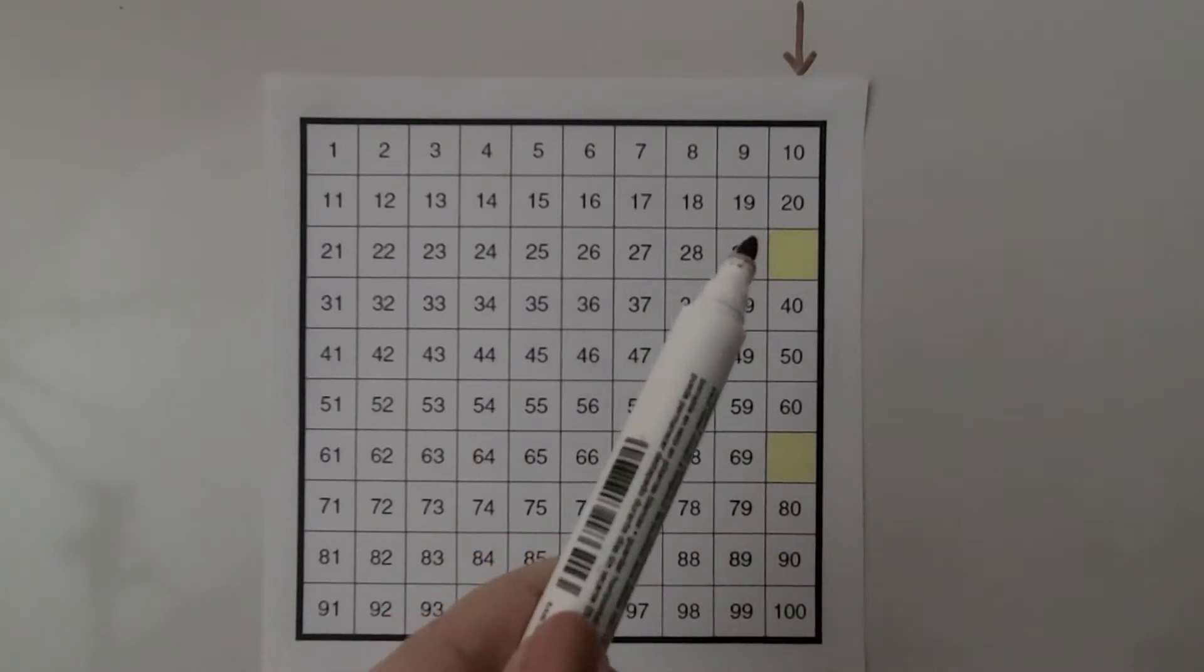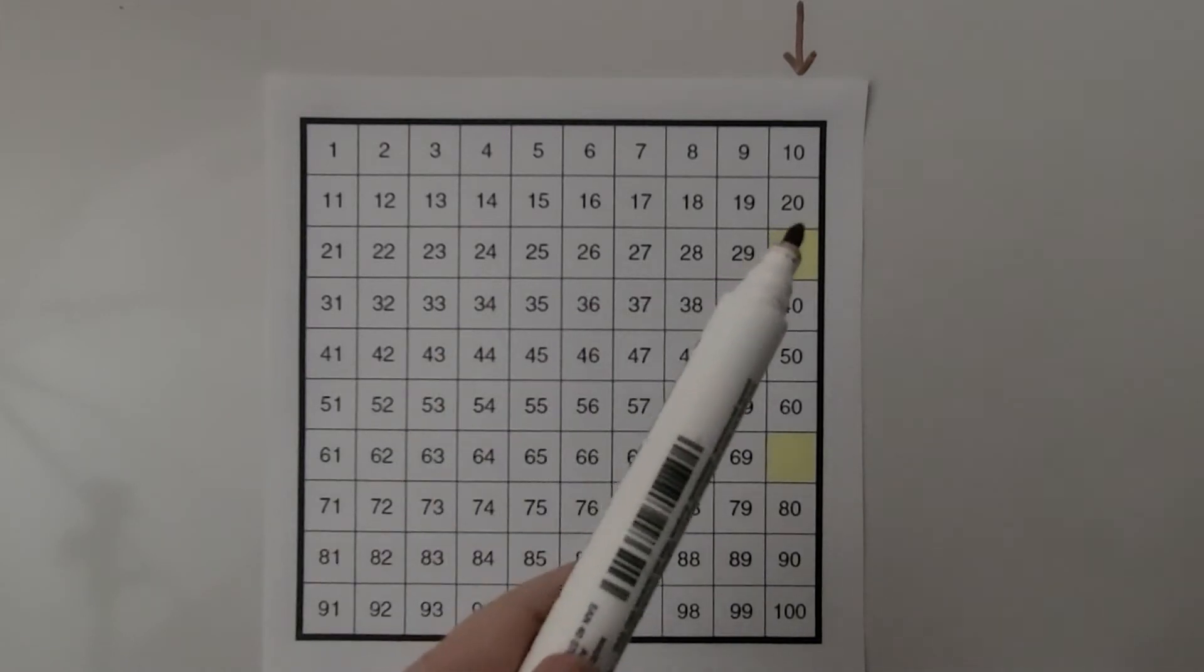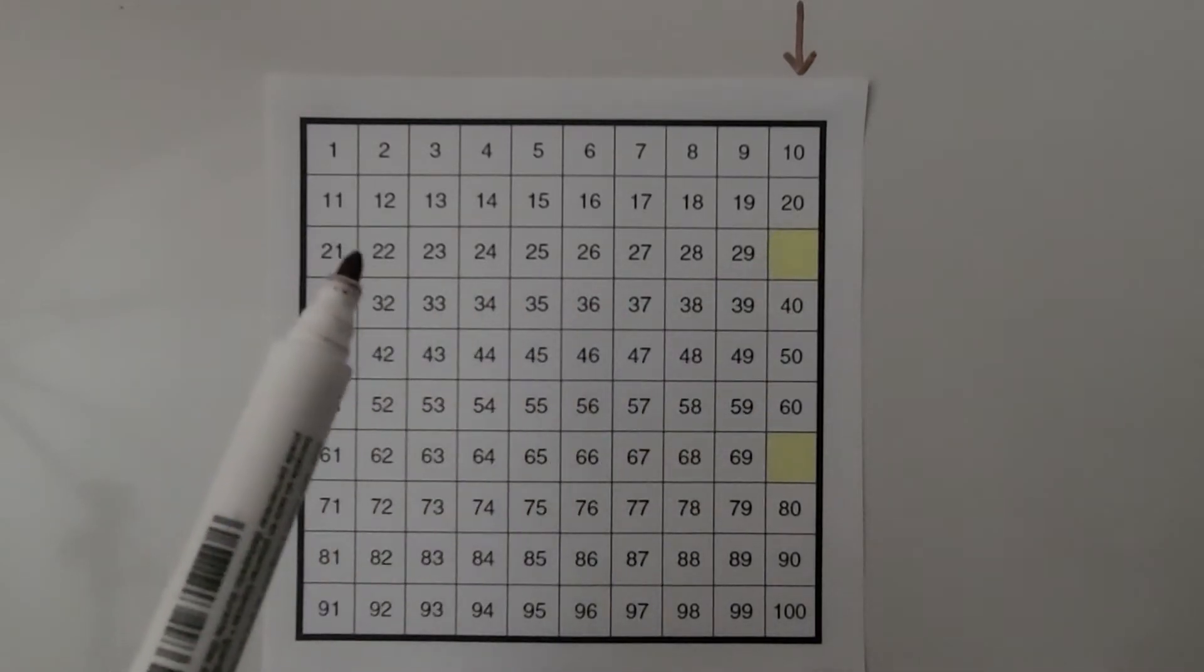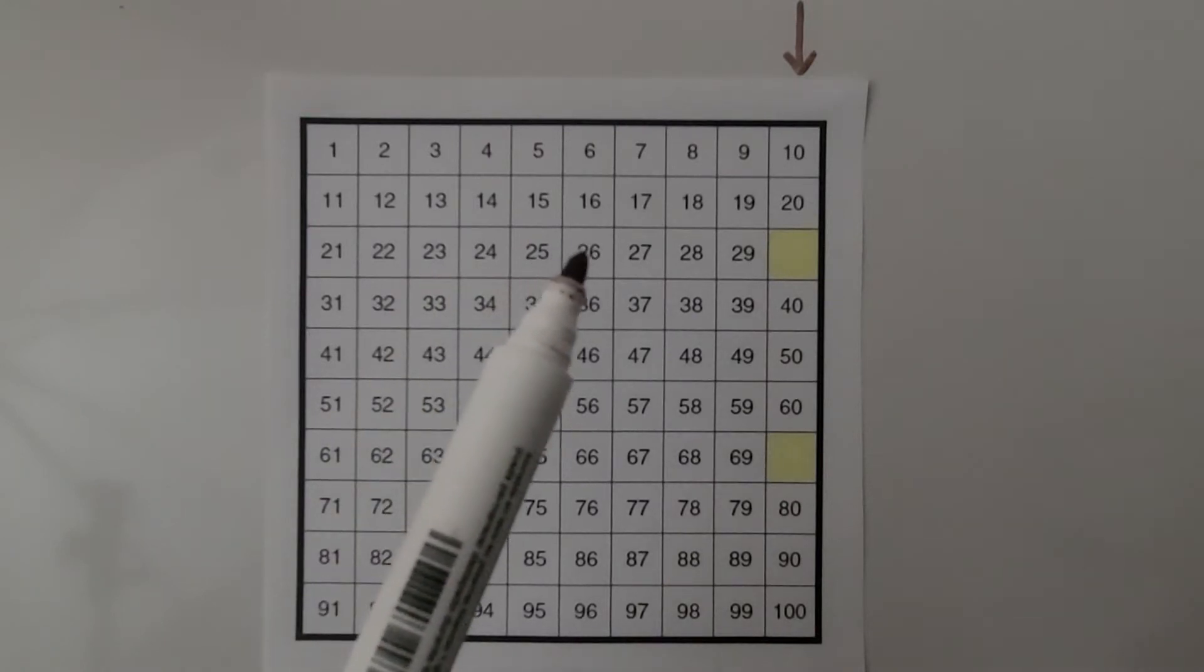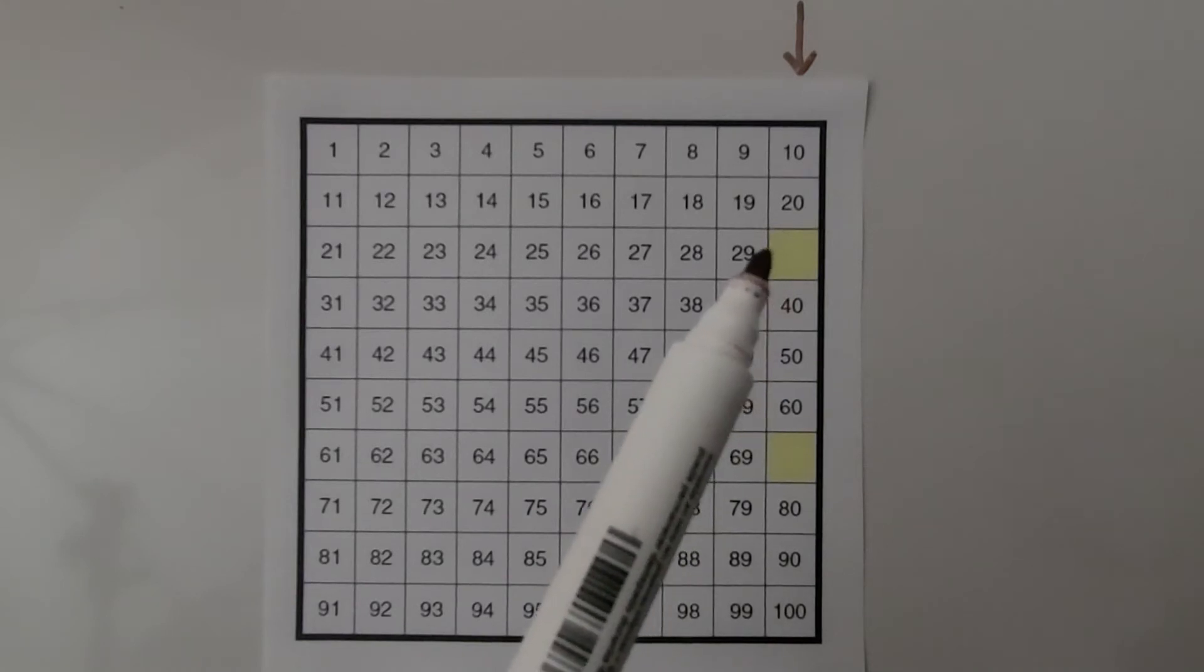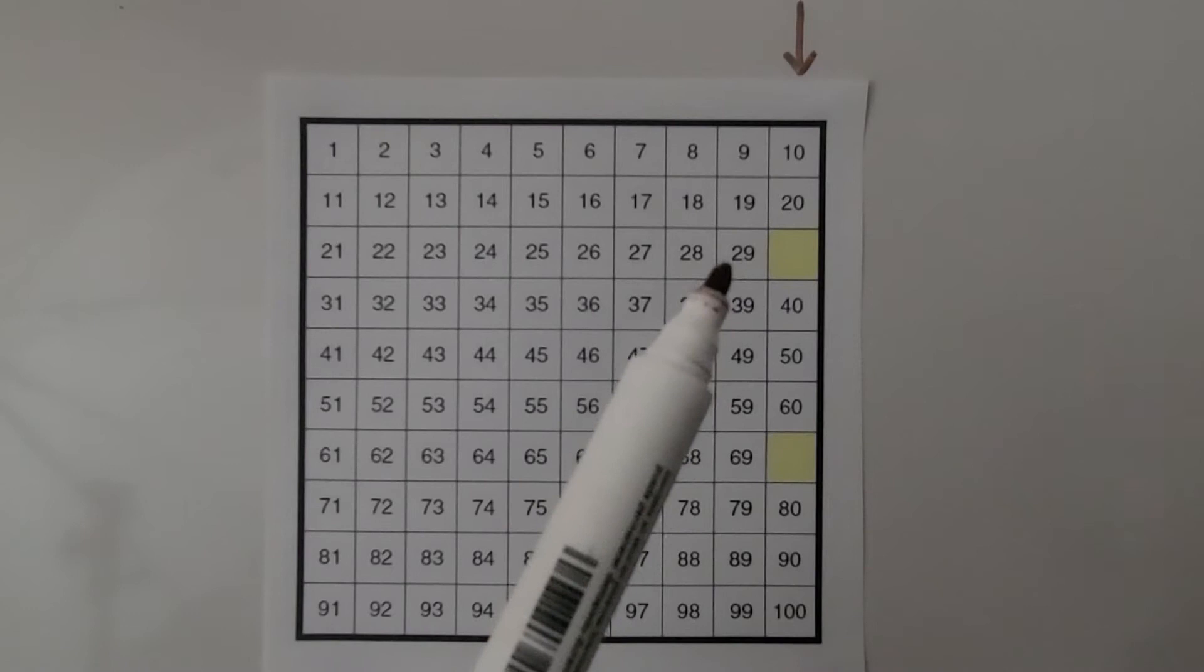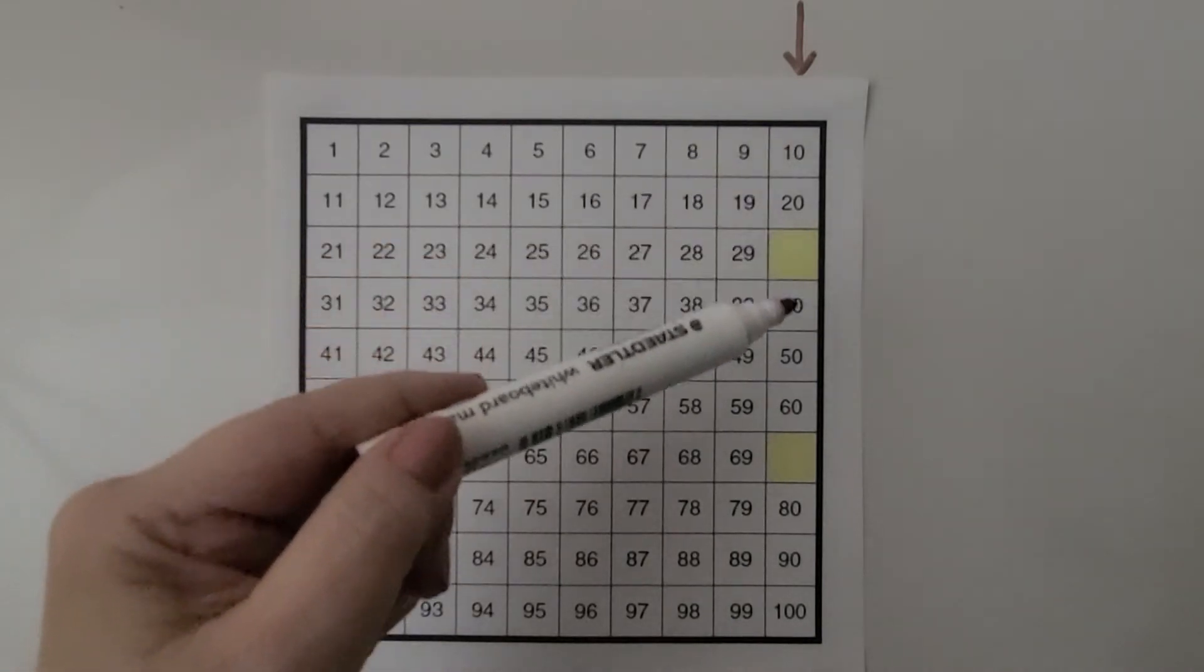We can whisper count, which means we can count quietly by whispering to ourselves or silently in our head. We can count 20, 21, 22, 23, 24, 25, 26, 27, 28, 29, 30. So that missing number must be 30. Thirty is one greater than 29. And looking down the column, we can see each number ends with a zero.